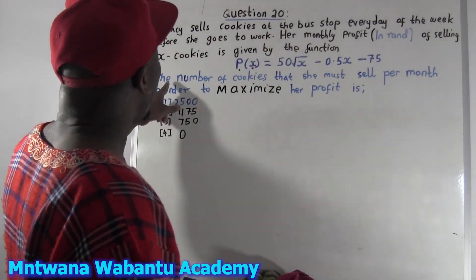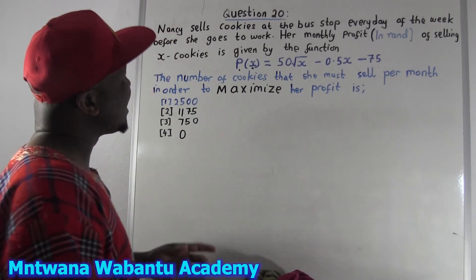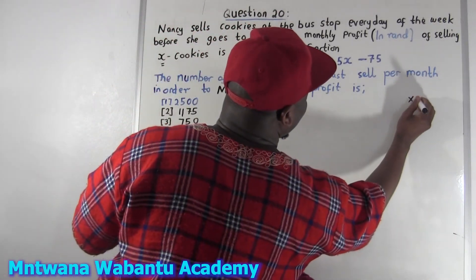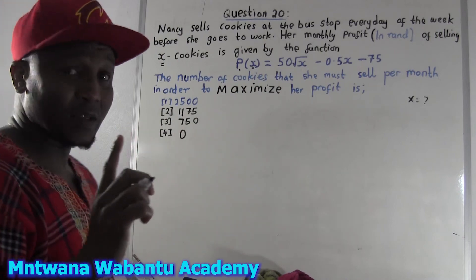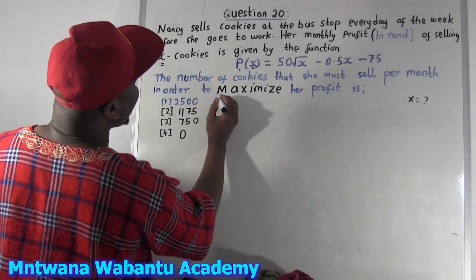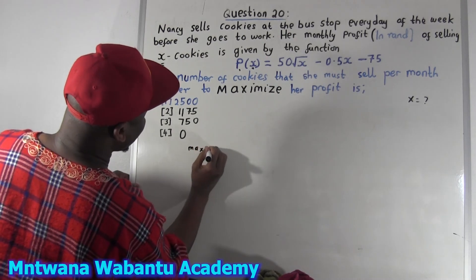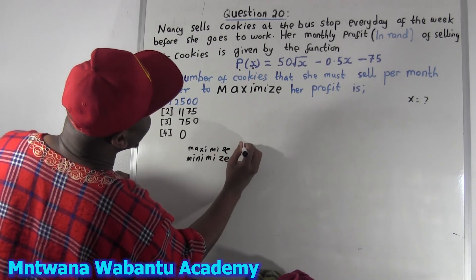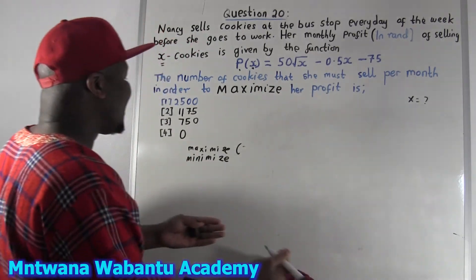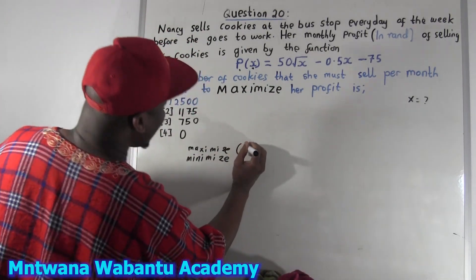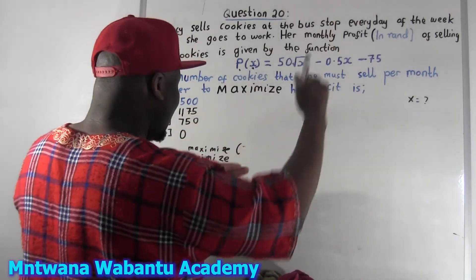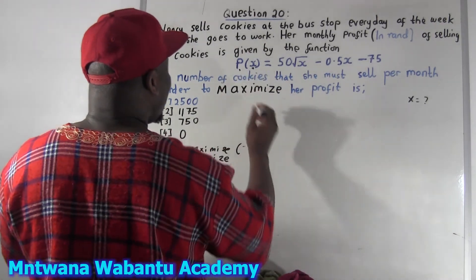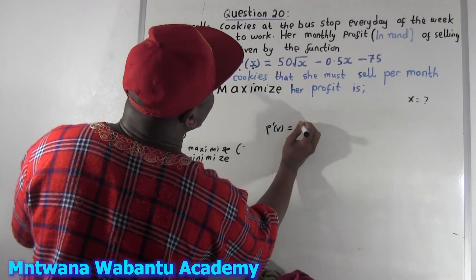Now they want you to get the number of cookies. Whenever they talk about maximized, minimized, or to get the profit — whenever you see words like maximize, greatest, biggest, or minimize, lowest, smallest — what you do is find the first derivative, and then equate it equal to zero.